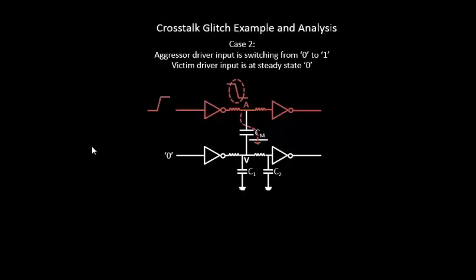So here is what is happening: when the output of this particular inverter is switching from logic 1 to logic 0, basically all the capacitances over here which are seen by node A are all getting discharged through this particular inverter.